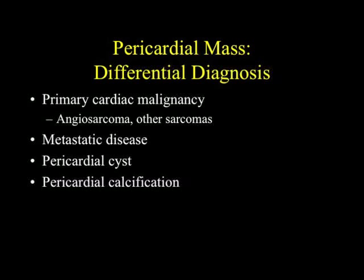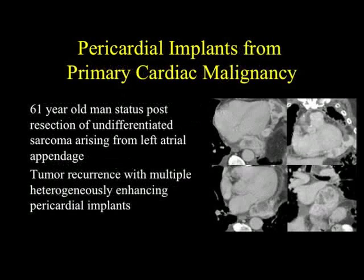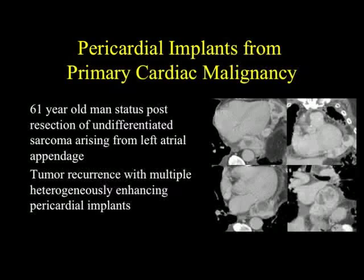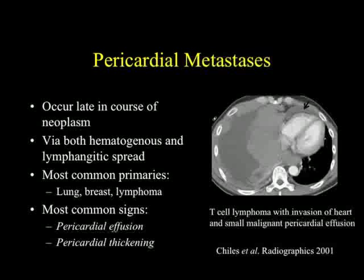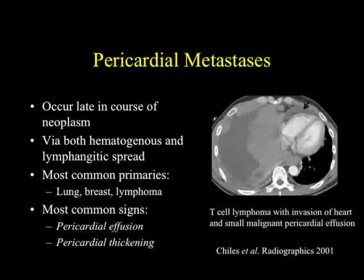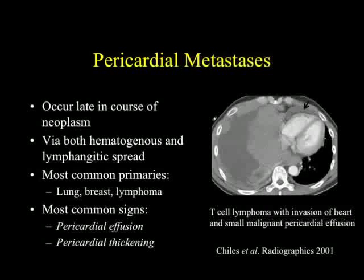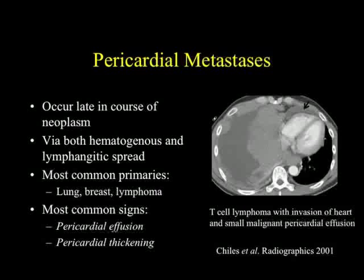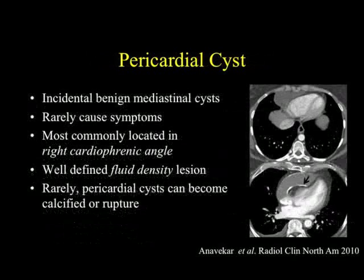The last thing we'll talk about is pericardial masses. When you talk about pericardial masses, you're talking about primary malignancies such as angiosarcomas, metastatic disease, and some benign processes like pericardial cyst or pericardial calcification. Here's a nice example of implants on the pericardium from a primary cardiac malignancy — this patient had undifferentiated sarcoma beginning in the left atrium, which spread with multiple enhancing pericardial implants. With hematogenous and lymphatic spread, often late in the disease process — particularly with lung, breast, and lymphoma — you can see pleural implants, tumor extension, and pericardial effusion, which in this case was malignant. The most common sign of pericardial metastasis is pericardial effusion; pericardial thickening also occurs, often with enhancement. When you see lobulations to pericardial fluid or to the pericardium, you have to suspect tumor infiltration.